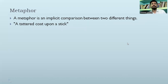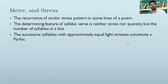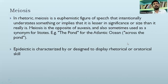Metaphor is an implicit comparison between two different things. An example is 'a tattered coat upon a tattered stick' — this is an easy metaphor and questions are frequently asked from it. Meter is the recurrence of similar patterns in lines of a poem. The determined feature of syllabic verse is the number of syllables in a line. The successive syllables with approximately equal light stresses constitute a pyrrhic. The octave is the first part of an Italian sonnet.